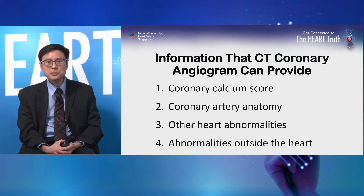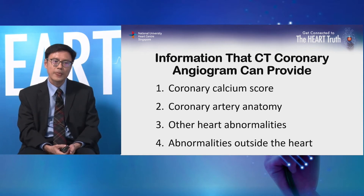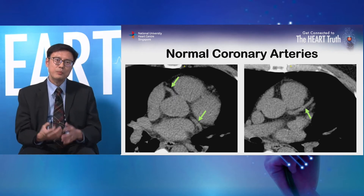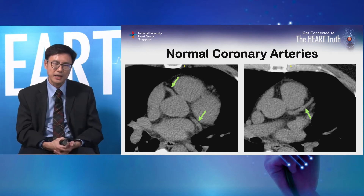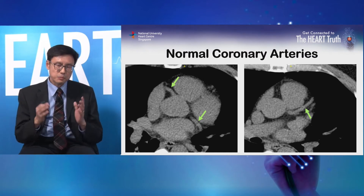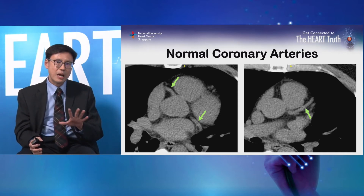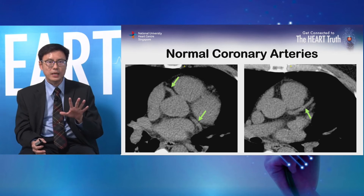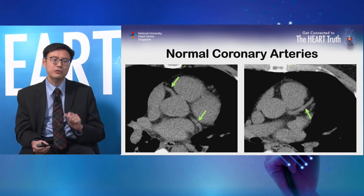There are four important sets of information we can obtain from CT coronary angiogram. First, we take a plain CT scan without injection of dye. In this plain CT scan, the coronary arteries — shown here in green — appear as grey. This is a picture of a patient with normal coronary arteries.